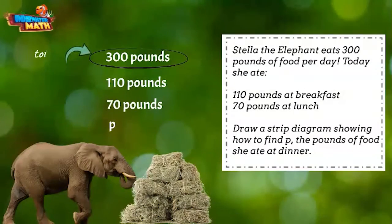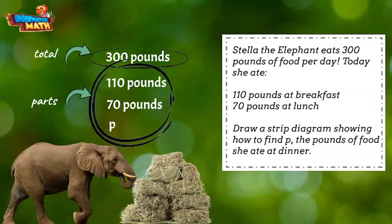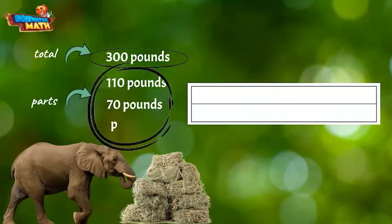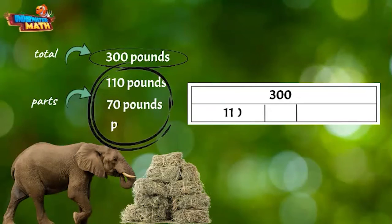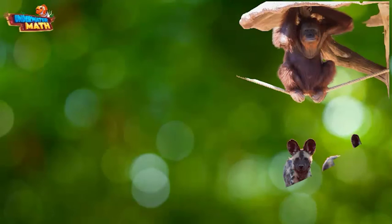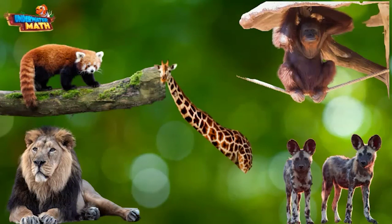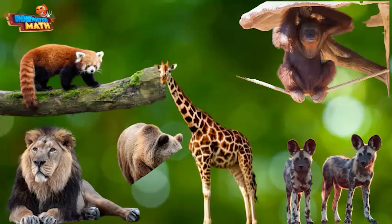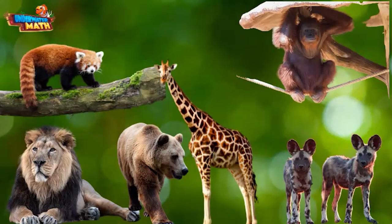Brilliant! 300 pounds is the total amount she eats per day, and these are the parts: breakfast, lunch, and the unknown dinner amount represented by p. Now let's put it together in a diagram. We put the total on one half of the model and break the second half into three parts, labeling them with our quantities. This model helps us visualize our problem using our unknown variable p. Creating strip diagrams can help us break up complex problems — what a terrific tool to have in our tool belt. Thanks for helping me today, see you next time!